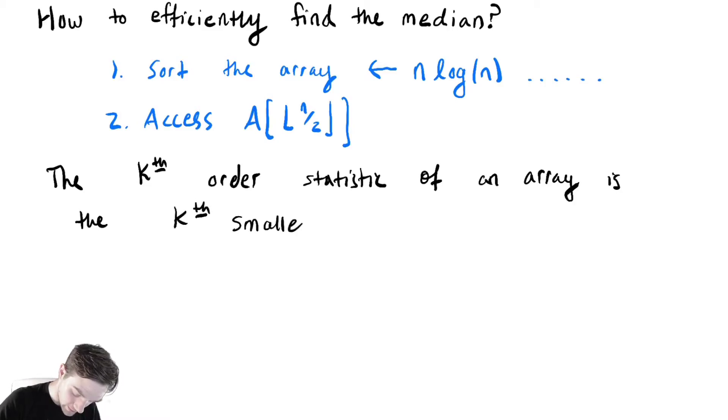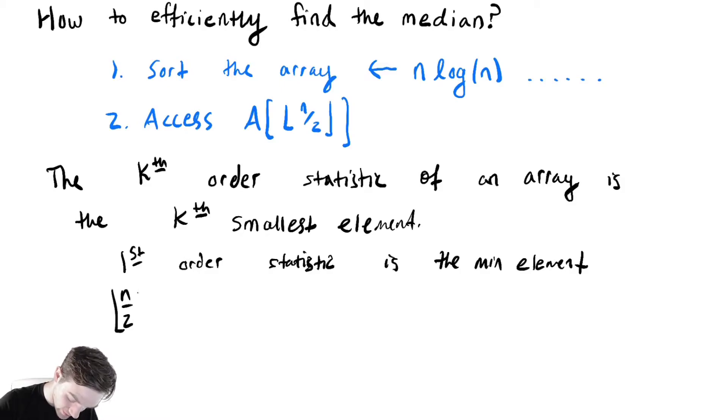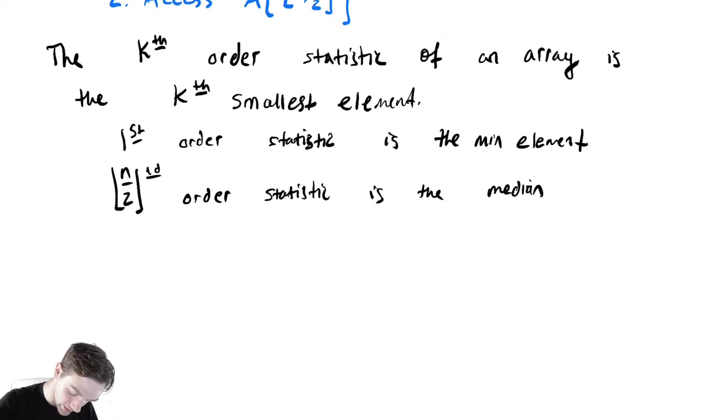So the first order statistic is the minimum element. The n over 2 rounded down order statistic is the median, and the nth order statistic would be the maximum.